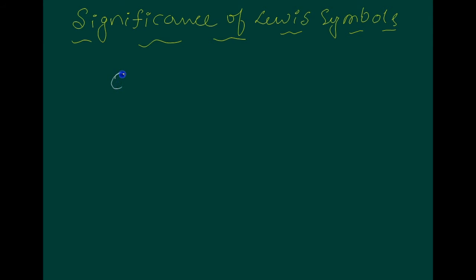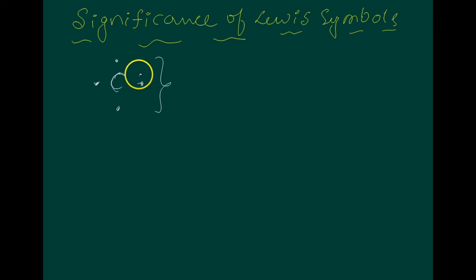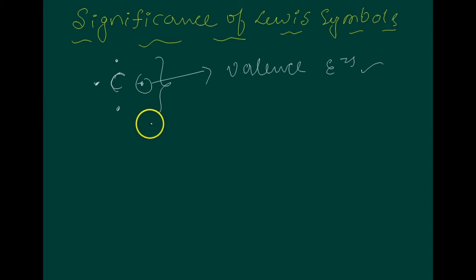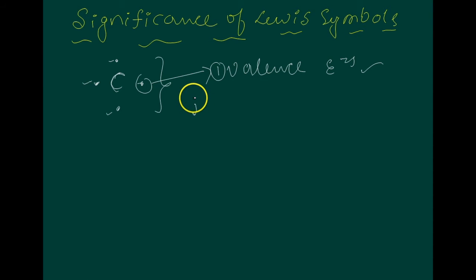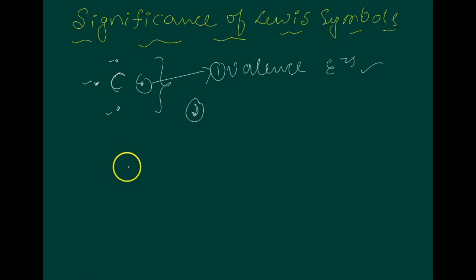For example, consider carbon, which has four valence electrons. We represent it in the Lewis symbol like this. The number of dots around the symbol represents the valence electrons. This number of valence electrons helps to calculate the group valence of the element. The group valence is generally either equal to the number of dots in the Lewis symbol or eight minus the number of dots.